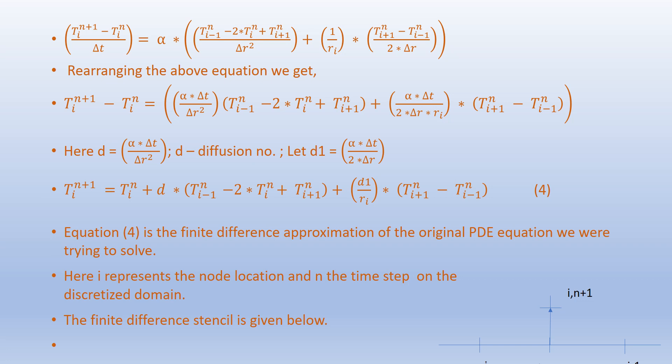Let D = α·Δt/Δr², where D is the diffusion number. Also let D1 = α·Δt/(2·Δr).